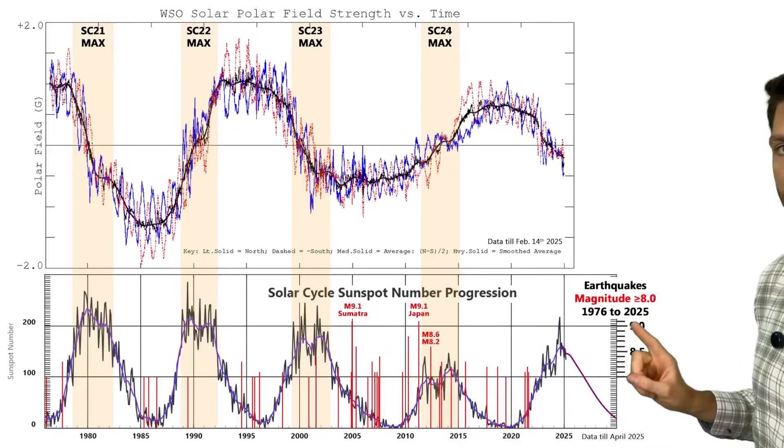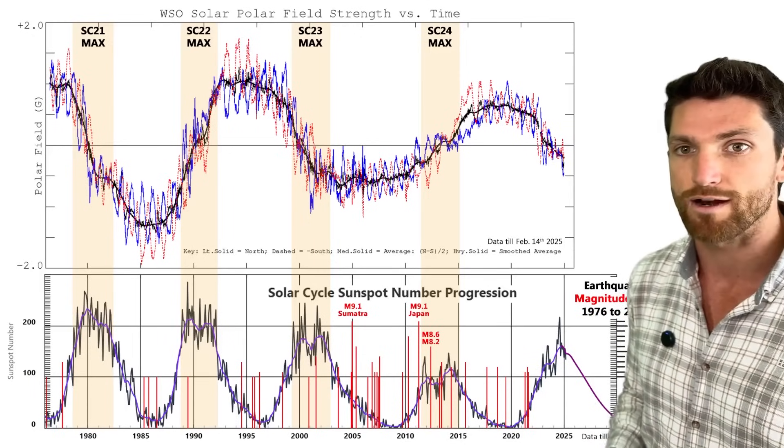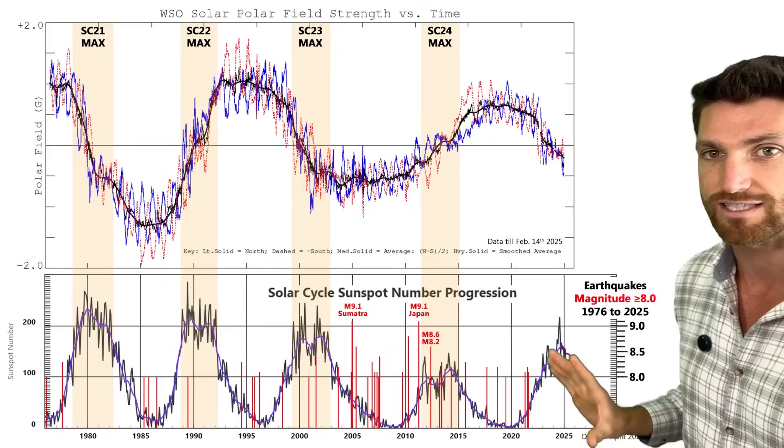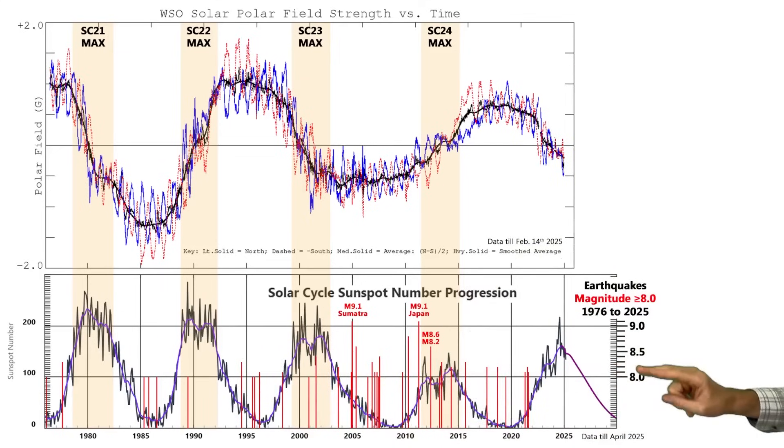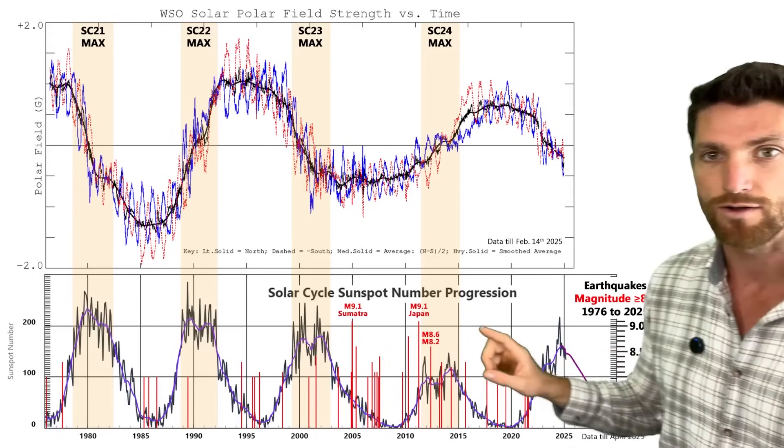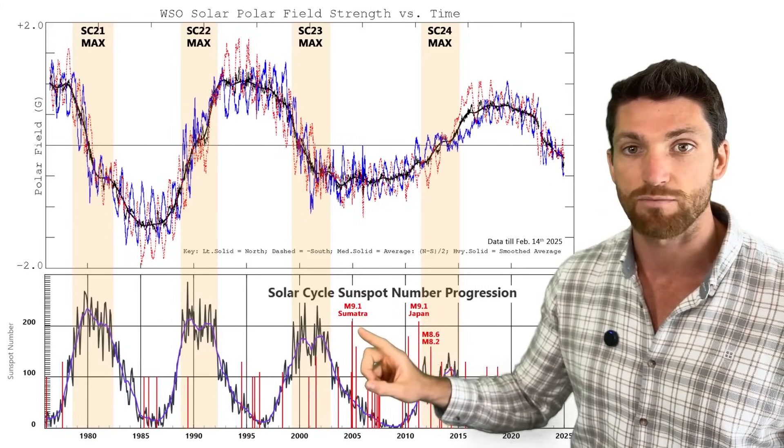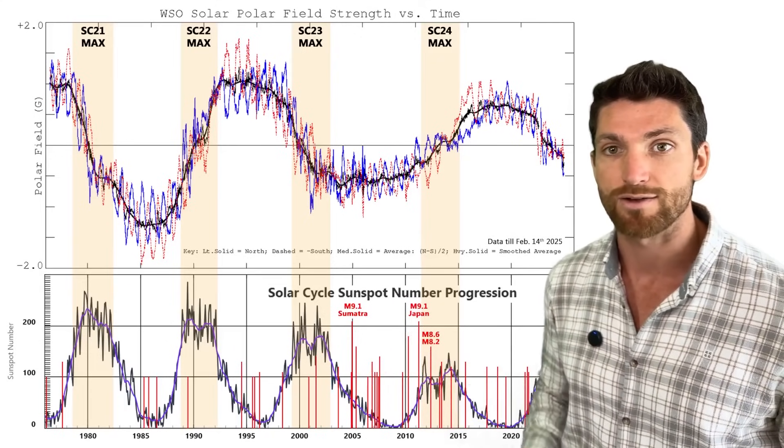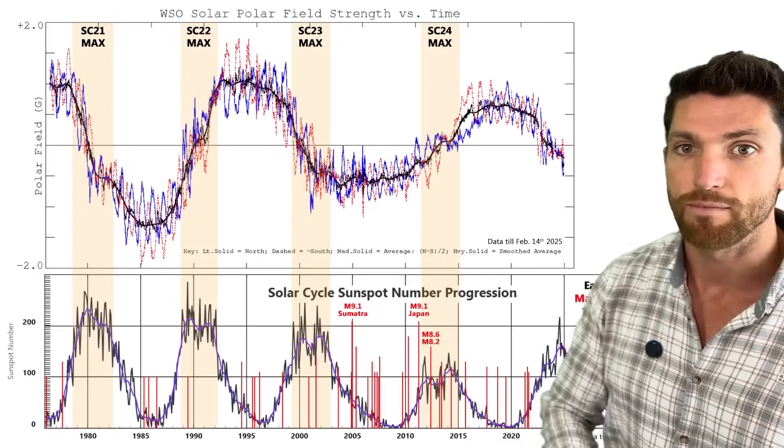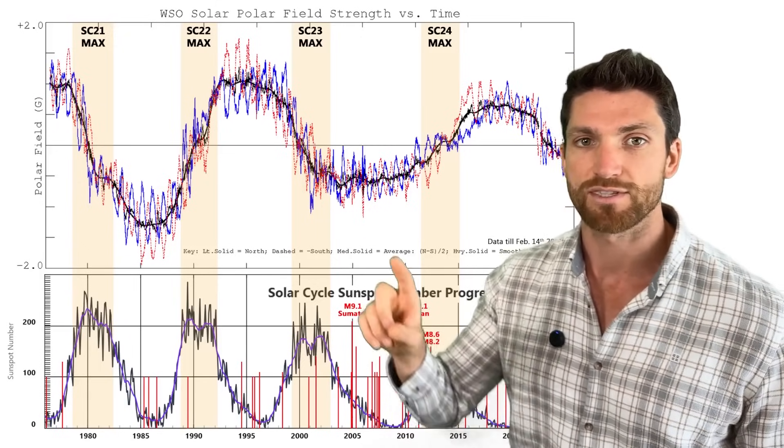And you will also see down below are earthquakes magnitude 8 or greater for this time frame 1976 to 2025. And I layer these in, we see our scale there so we actually can get the magnitude as well. The two big ones being the magnitude 9.1s that hit Sumatra and then Japan, 2004-2011. Those are the biggest of this time frame. But let us look up top to start.